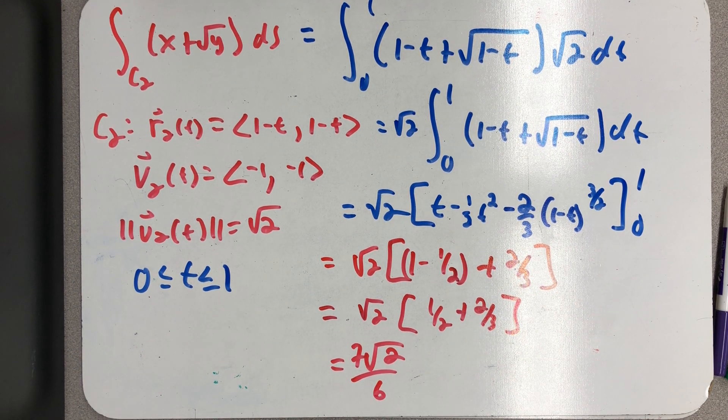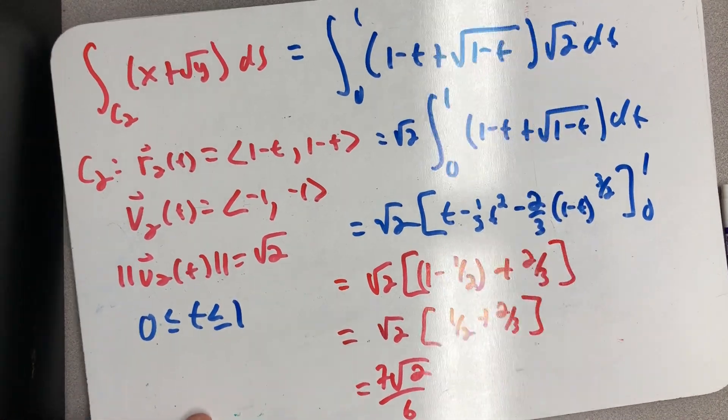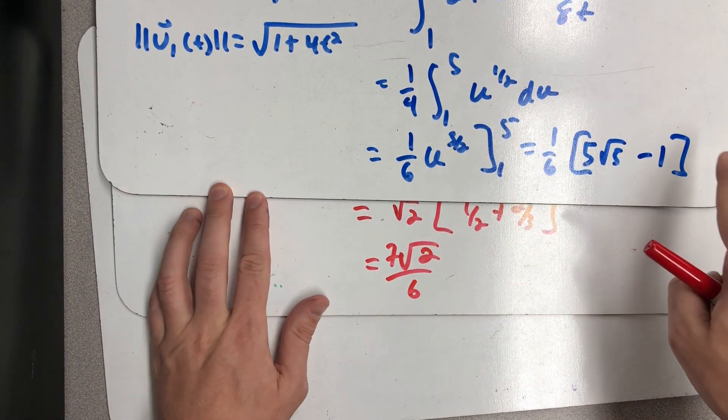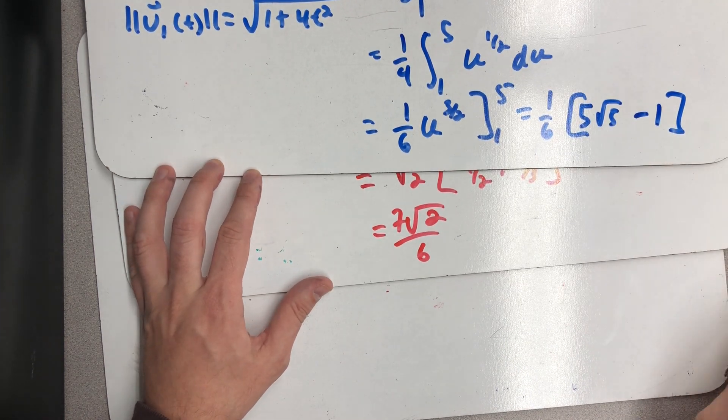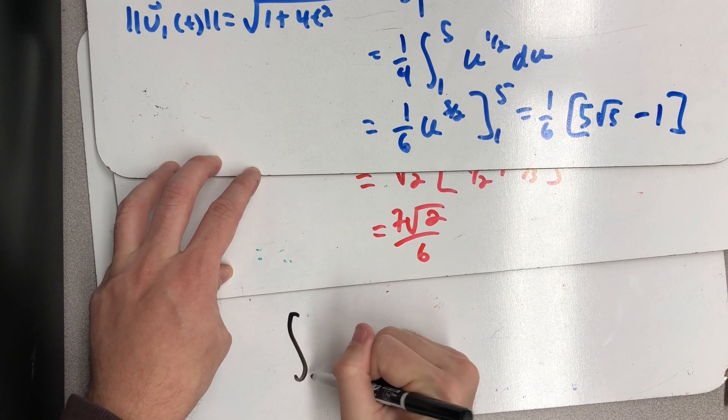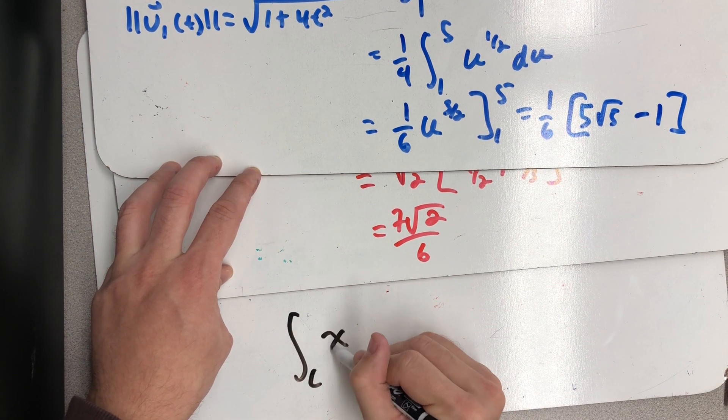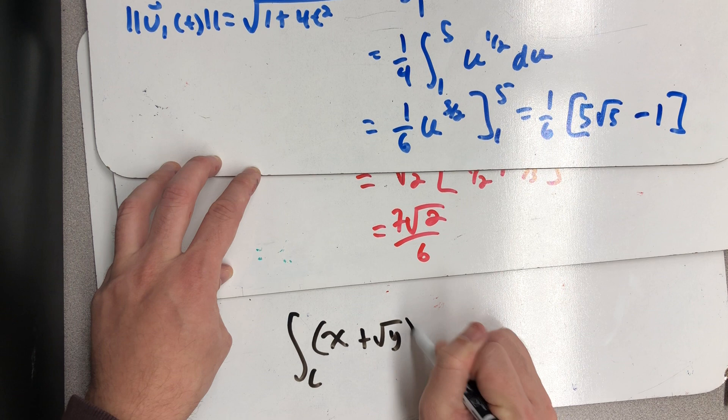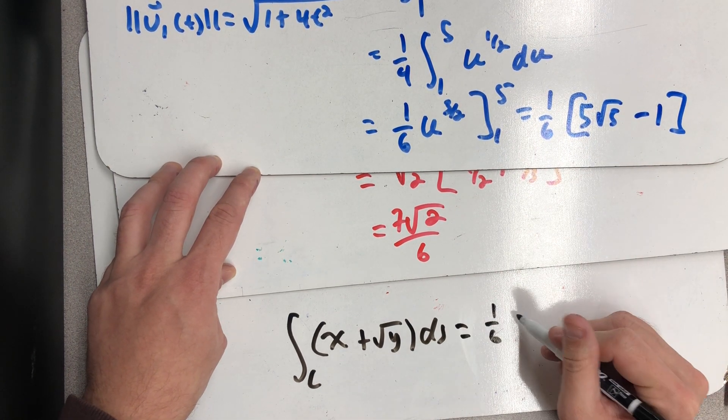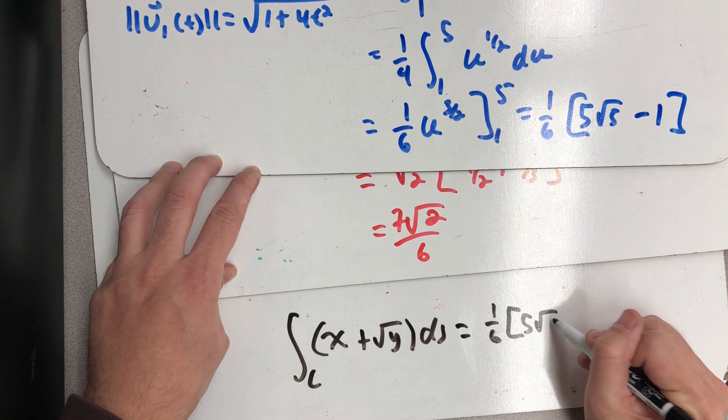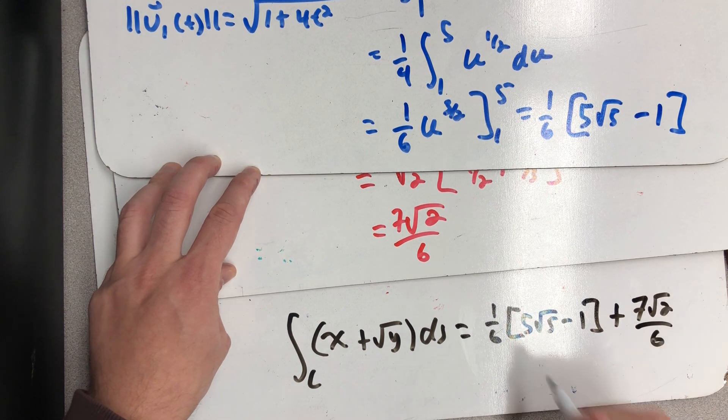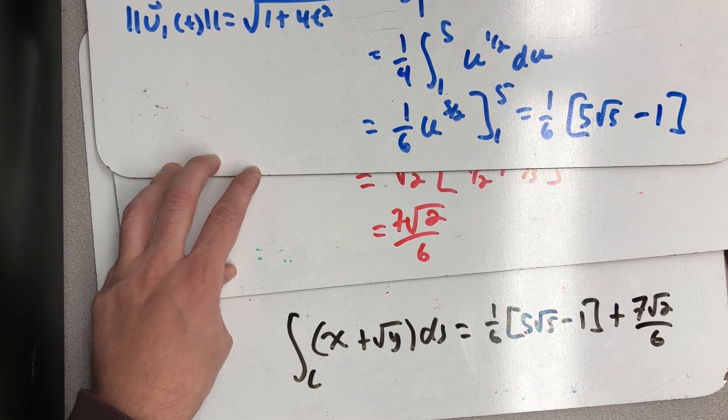So now that I have integrated over both paths, I know the path integral I was actually asked to find is the sum of those two quantities. And there is our final answer.